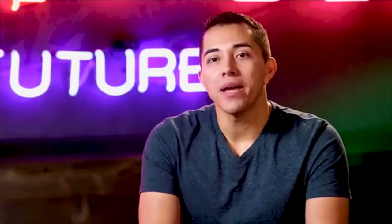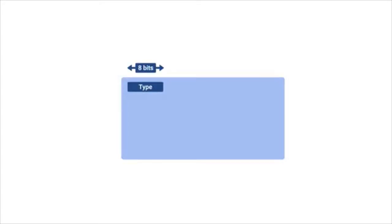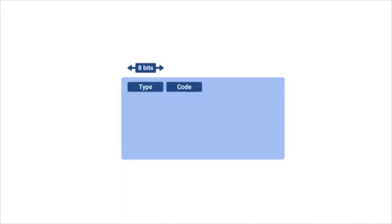ICMP is mainly used by a router or remote host to communicate why a transmission has failed back to the origin of the transmission. The makeup of an ICMP packet is pretty simple — it has a header with a few fields and a data section used by a host to figure out which of their transmissions generated the error. The first field is the type field, 8 bits long, which specifies what type of message is being delivered — for example, destination unreachable or time exceeded. Immediately after is the code field, which indicates a more specific reason for the message. For example, within the destination unreachable type, there are individual codes for destination network unreachable and destination port unreachable.